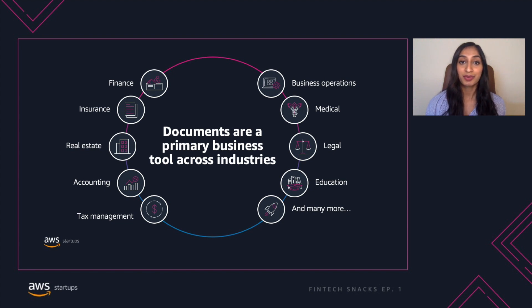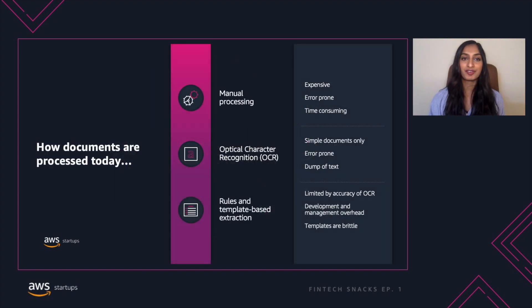This is where Amazon Textract can help. But first let's talk about how documents are processed without Amazon Textract. Manual processing is time consuming, error prone, and has significant overhead. It's overall non-reliable for production and causes a lot of redundancy in the work employees are doing.